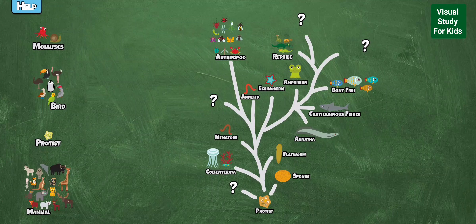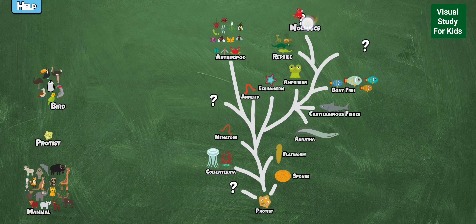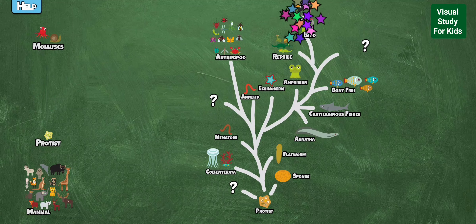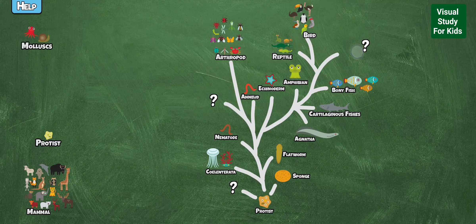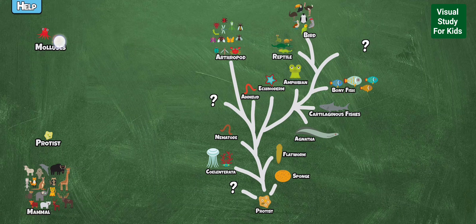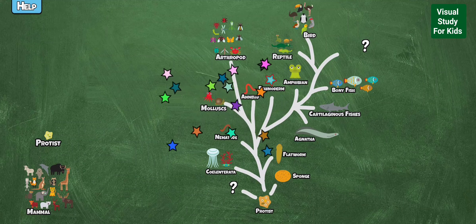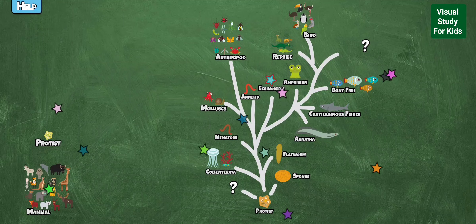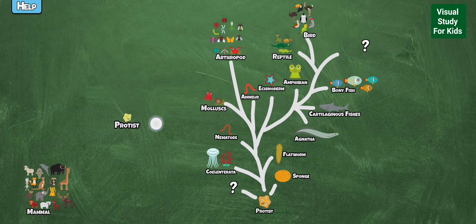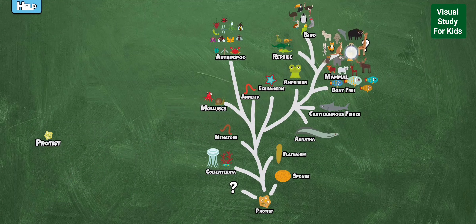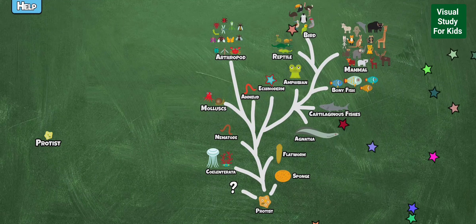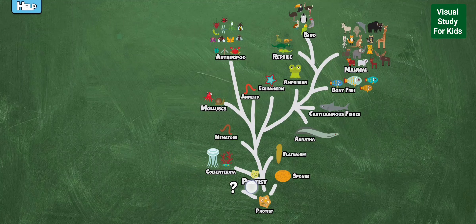Complete the missing steps in the evolution of these animals. Mollusk, Bird, Protist, Mammal, Protist. Correct.